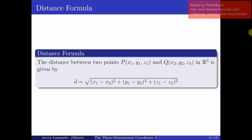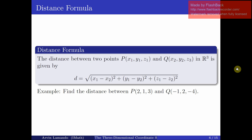Now let us recall the distance formula for R3. This is just a straightforward generalization of the familiar distance formula in R2. The distance between two points P and Q in R3 is given by the square root of the sum of the squares of the differences between the corresponding coordinates of P and Q. If we ignore the last term, we recover the usual distance formula for R2.